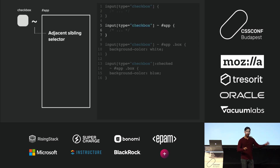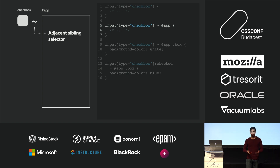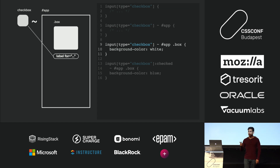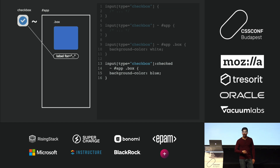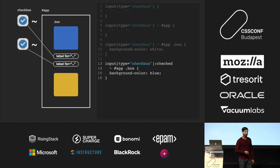If you have a checkbox that lives outside the app, you could use the tilde selector — the adjacent sibling selector — and apply a label inside the app. Labels are great because they magically map the checkbox to the label, so when you click the label, it will check that checkbox. You could use the tilde selector to select that box, make it change styles, and you can do this with more than one checkbox, giving you dynamic behavior and styling.